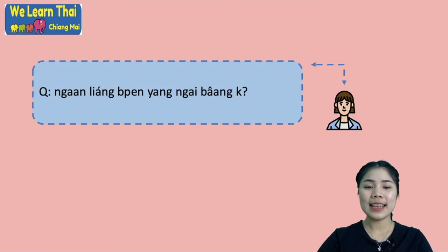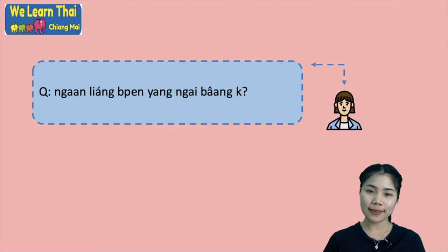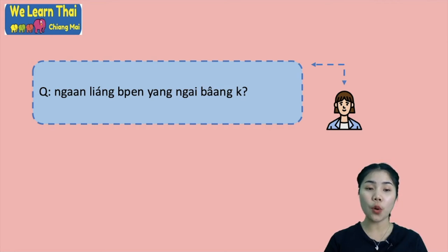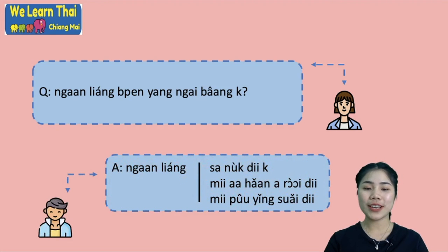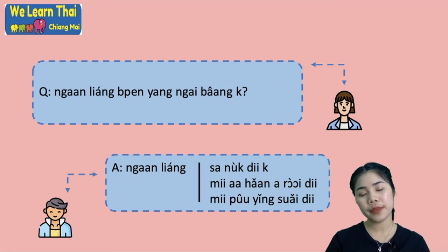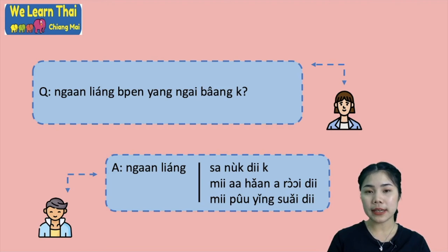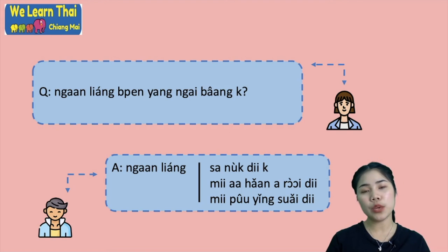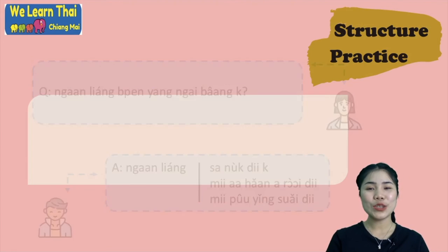And the next: งานเลี้ยงเป็นยังไงบ้าง — how was the party? Maybe you went to the party last night with your friend, and your friend wants to know how it was. They will say งานเลี้ยงเป็นยังไงบ้าง. For the answer, you can say งานเลี้ยงสนุกดีครับ — the party was fun. Or งานเลี้ยงมีอาหารอร่อยดีครับ — the party had delicious food.